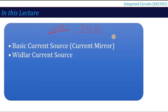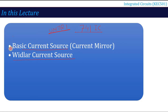First of all, we have to discuss two circuits which are used in your 741 IC. These two circuits are the current mirror circuit, that is called the basic current source, and the second one is the Widlar current source. These two are very important basics because they are used in your 741 IC, which we will start in the next lecture.